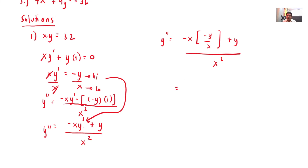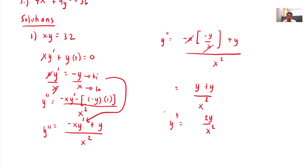That is equal to: cancel x, and negative of negative y is positive y, plus y, all over x squared. That equals 2y all over x squared. So that is your y double prime.